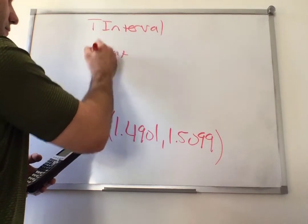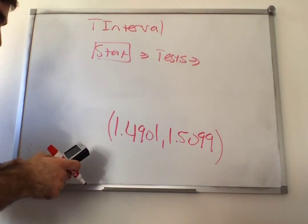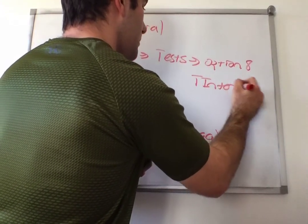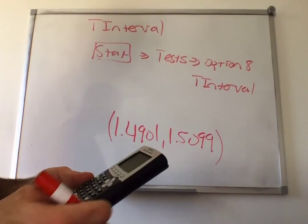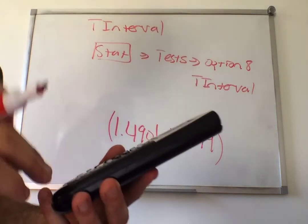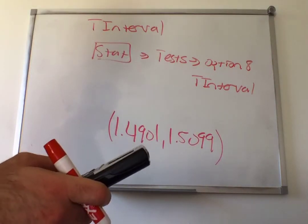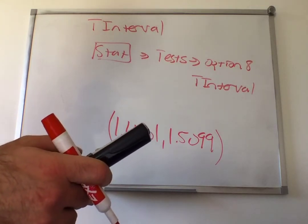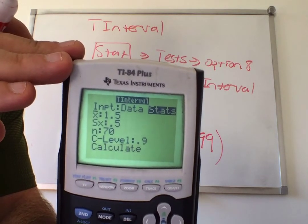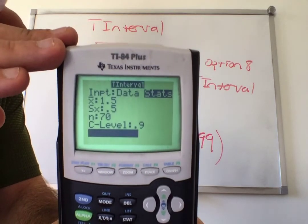If you hit stat, go over to tests, it is option 8 — the t-interval. Once you go to t-interval, it says if you have raw data you can put it into a list, or go to stats and fill in the information. We have a mean of 1.5, sample standard deviation of 0.5, n of 70, and confidence level of 90%. The problem from the book didn't specify a confidence level so we assumed 90%.